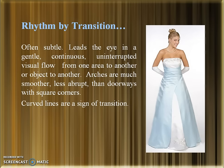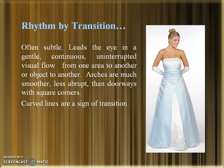Next is Rhythm by Transition. It is often subtle — it leads the eye in a gentle, continuous, uninterrupted visual flow from one area to another. Examples include arches, which are smoother and less abrupt than doorways with square corners. Curved lines are a sign of transition because they continuously and gently lead your eye from one point to another. In this dress, the shape continuously changes from a rectangular shape gradually turning into a bell shape, which is rhythm by transition.